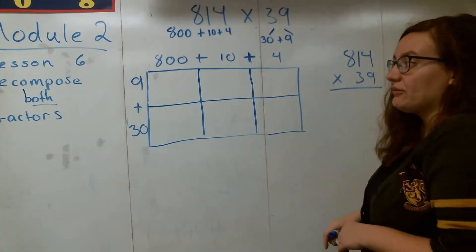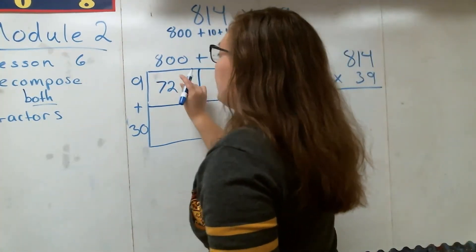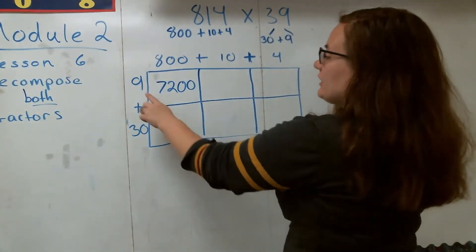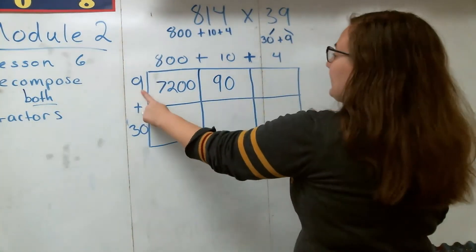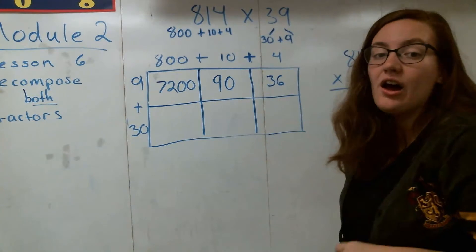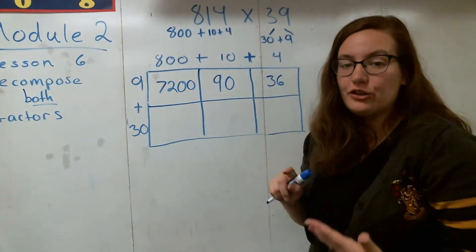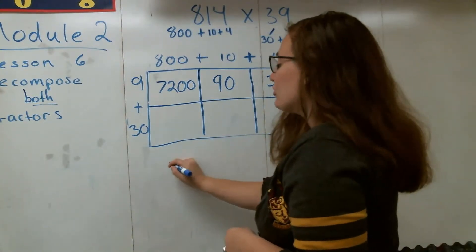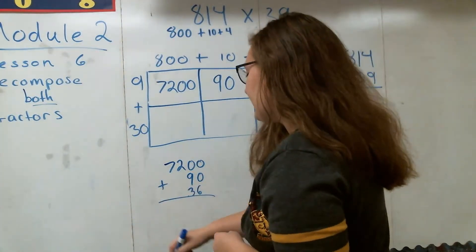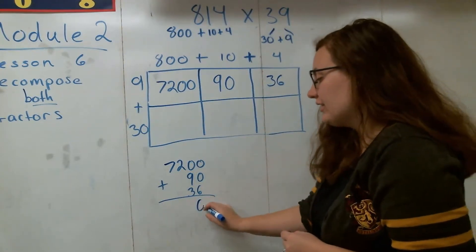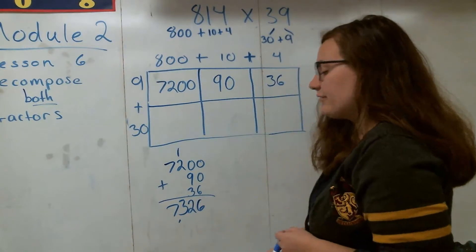Let's start multiplying in our area model. We have 9 times 800 first: I think of this as just 9 times 8, which is 72, and then add two zeros. Then I move to 9 times 10: I think of this as 9 times 1, which is 9, and add that zero to get 90. Finally, 9 times 4 is just 36. Remember, these three numbers — 7,200, 90, and 36 — need to be added together to create the partial product you're going to see in the standard algorithm.